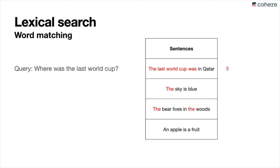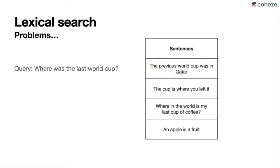The first sentence has five words in common with the query, the second has one, the third has two, and the fourth has zero. So the first one wins, and this time it did okay — it actually found the answer. But as you can imagine, this creates some problems.